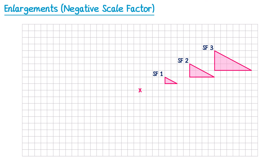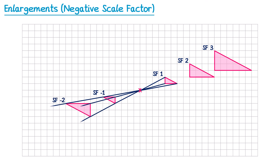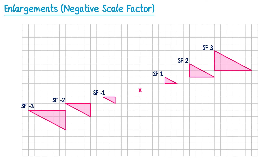But what if the scale factor was negative? We still consider the original journey from the center of enlargement to a point on the shape, but then we do that journey in the opposite direction — we go beyond the center of enlargement. For scale factor negative 1 we do the journey the opposite way. For scale factor negative 2 we do it a second time, and for negative 3 a third time. Notice how when we have a negative scale factor the shape is flipped upside down.